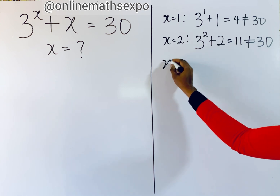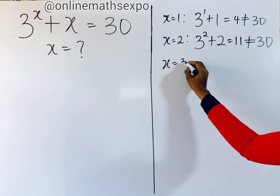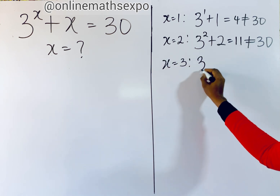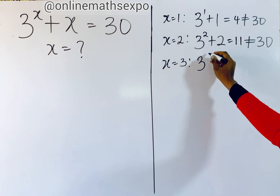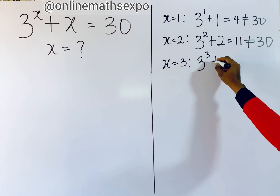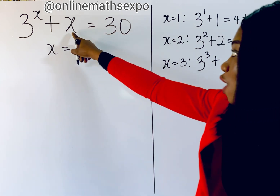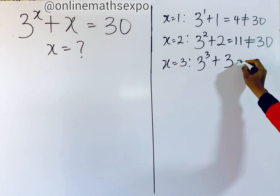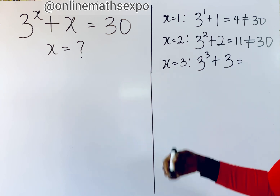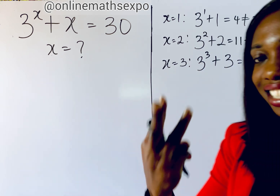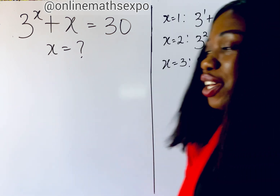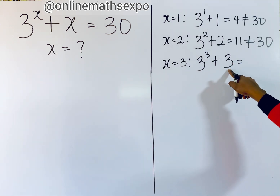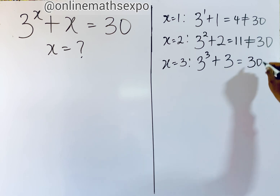Now when you have x as 3, you are going to have 3 to the power of 3, then plus 3. You know that 3 to the power of 3 is 3 multiplied 3 times to give you 27, plus 3 gives you 30.